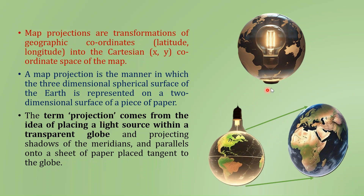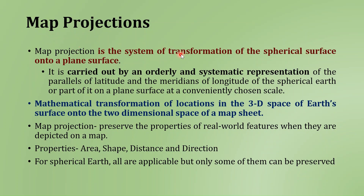This term 'projection' comes from the idea of placing a light source within a transparent globe and projecting the shadows of the meridians and the parallels onto a sheet of paper which is placed tangent to the globe. So, the map projections are the transformation of the spherical surface onto a plane surface, carried out by representing the parallels of latitude and the meridians of longitude on a plane surface at a conveniently chosen scale. The proper definition is the mathematical transformation of locations in three-dimensional space of the earth's surface onto the two-dimensional space of a map sheet.